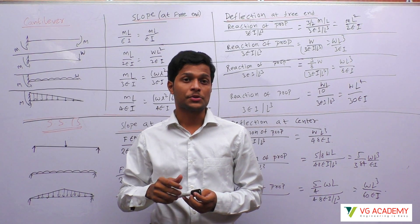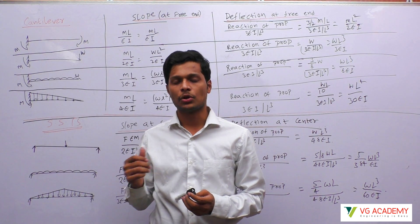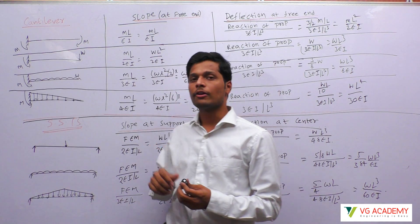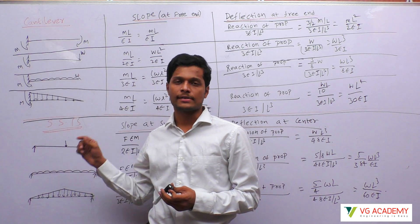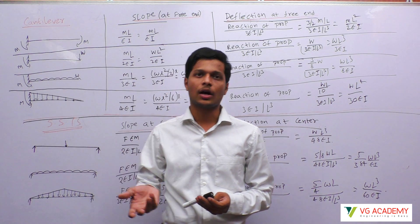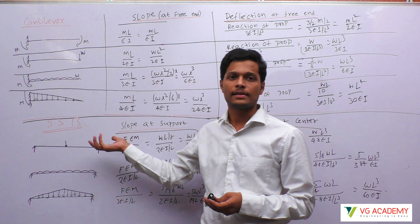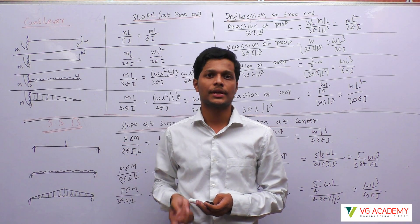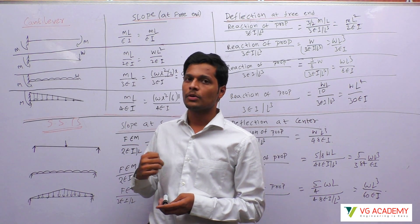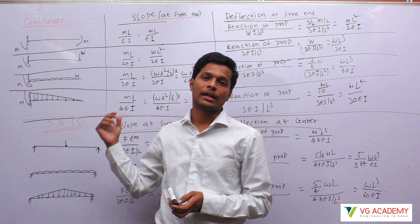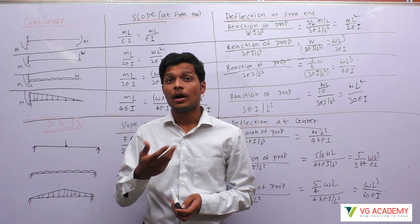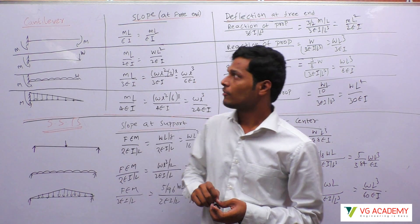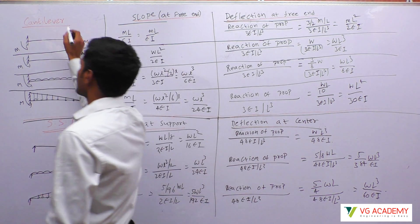We will see some shortcuts to find slope and deflection of a beam without the actual method of solving. I will be discussing only cantilever and simply supported beam because in competitive exams, a continuous beam or frame may not be asked within the time constraint available. So if a standard case of cantilever or simply supported is given, how to get the answers without actually solving — we will see now. First, I will start with cantilever.